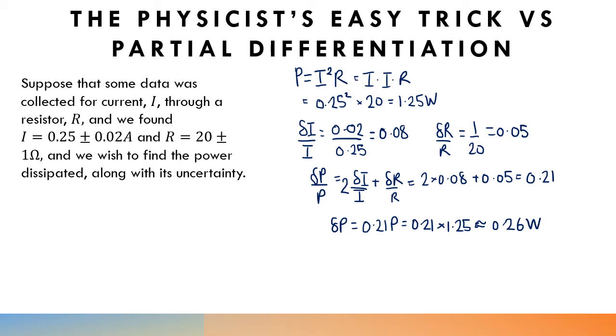And this is how the errors are combined from an A-level physicist's point of view. Now let's go to A-level maths partial differentiation. So we know, as long as the changes are small enough, that the uncertainty in the power or the small change in the power is approximately equal to...